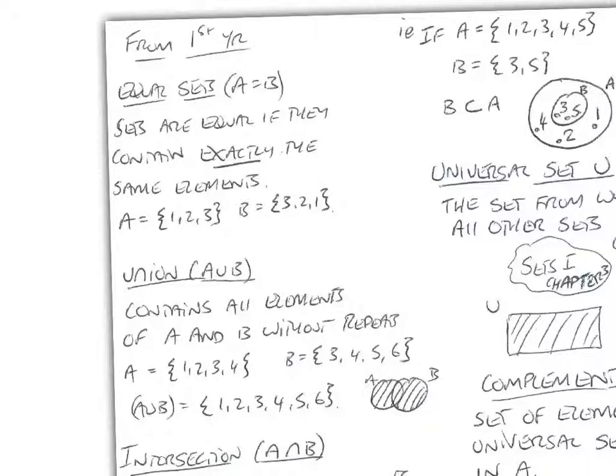Okay, so we'll just start sets by going back to first year and reminding ourselves that equal sets, where a set of elements A equals a set of elements B, the sets are equal if they contain exactly the same elements. So here's the elements 1, 2, 3 in set A and 3, 2, 1 in set B. They're not in the same order, but they're exactly the same. They're equal sets.